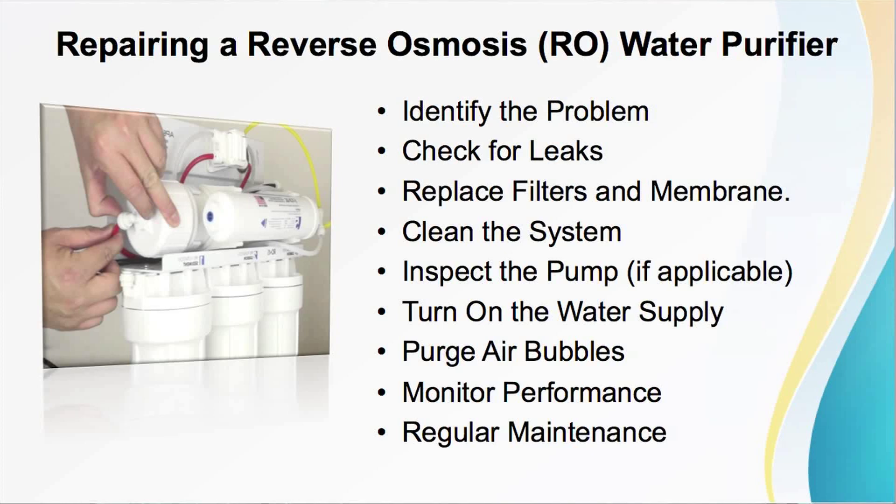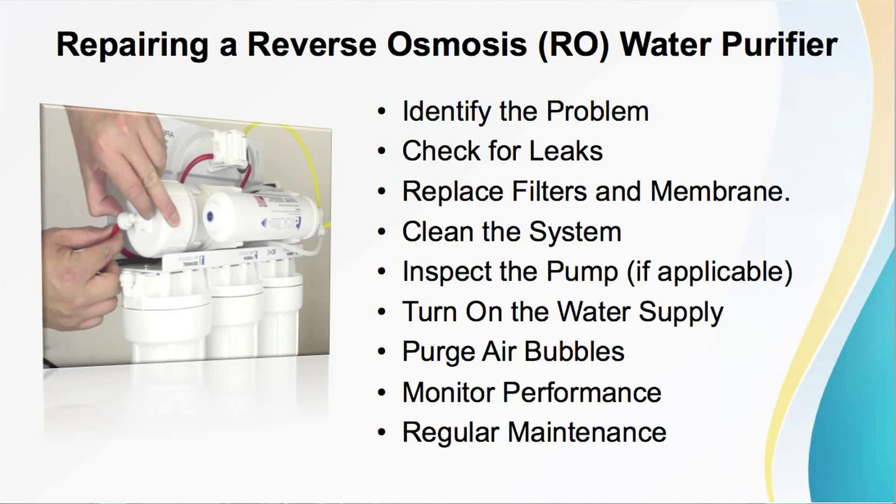The next step is inspect the pump. If your system has a pump and you hear unusual noises or experience low water pressure, inspect the pump. Check for loose or damaged wiring and replace or repair as needed. Test the pump with a multimeter to ensure it is functioning correctly, or consult the manufacturer's guidelines for specific testing procedures. Then finally, turn on the water supply.